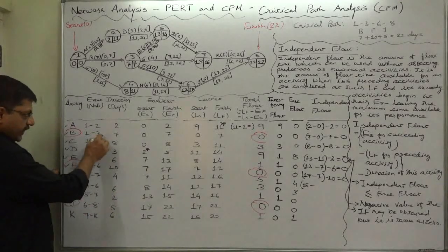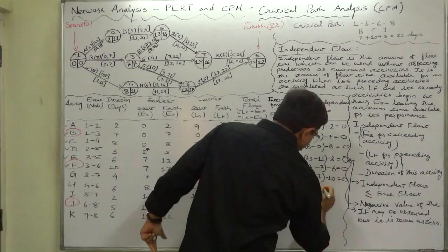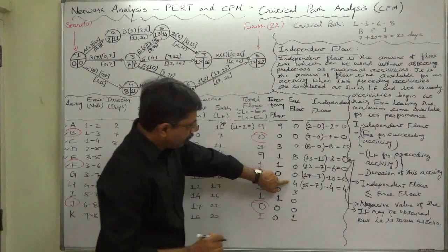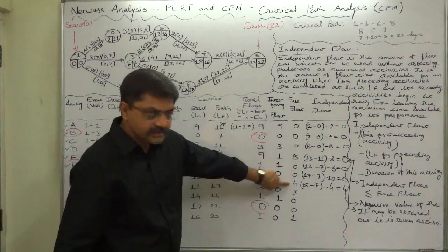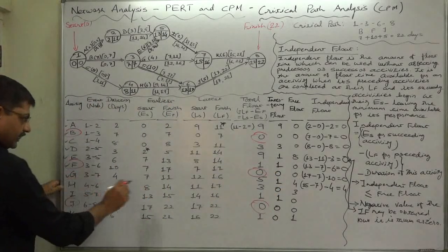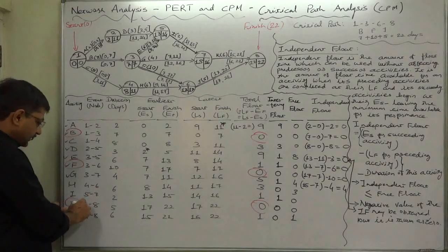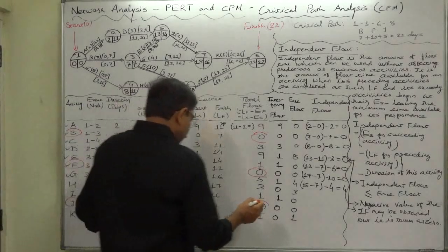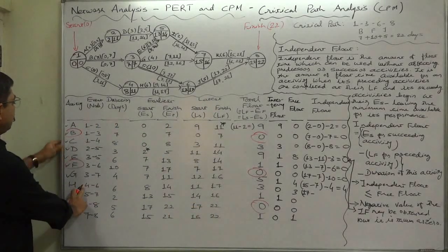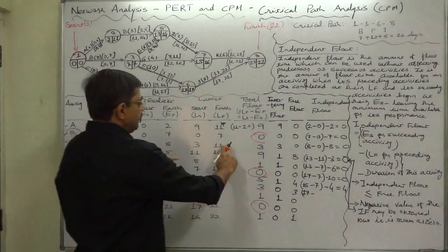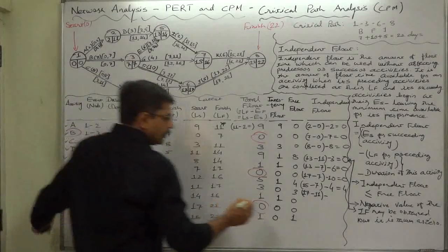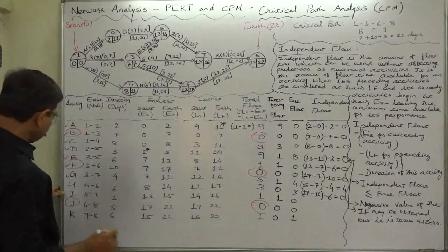Activity G (3,7): its successor is K, with earliest start time 15. G's predecessor is B, with latest finish time 7. So: 15 minus 7 minus duration of G (4) equals 4. Independent float of G is 4, which equals its free float — the maximum it can be. Activity H (4,6): its immediate successor is J with earliest start time 17. H's predecessor is C, with latest finish time 11. So: 17 minus 11 minus duration of H (6) equals 0.